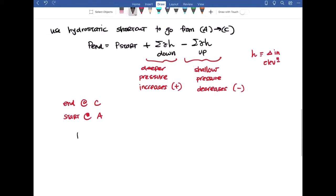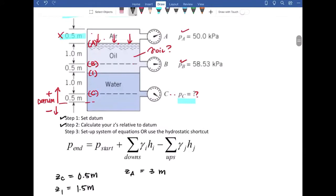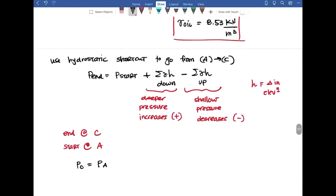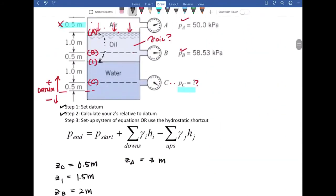So we have PC is equal to PA. Now let's go back to our image. From A we're going to move through oil and go all the way down to one. So we're going from A to one through oil and we're going down. So we're going to go plus, and I'm just labeling things here. A to one through oil.